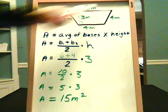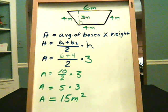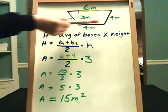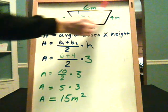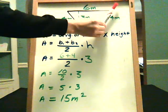This is a trapezoid. The definition of a trapezoid is a four-sided figure that only has one set of parallel lines. So these are the bases and they are parallel to each other. Notice this line is not parallel to this line.